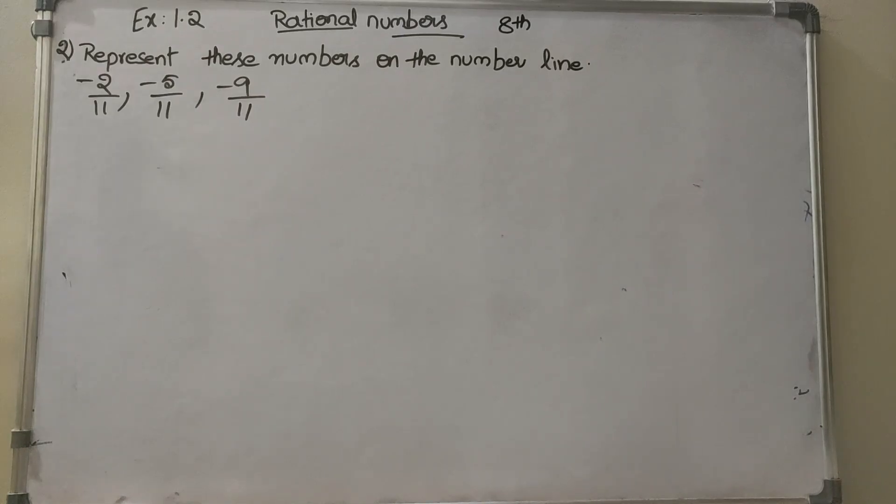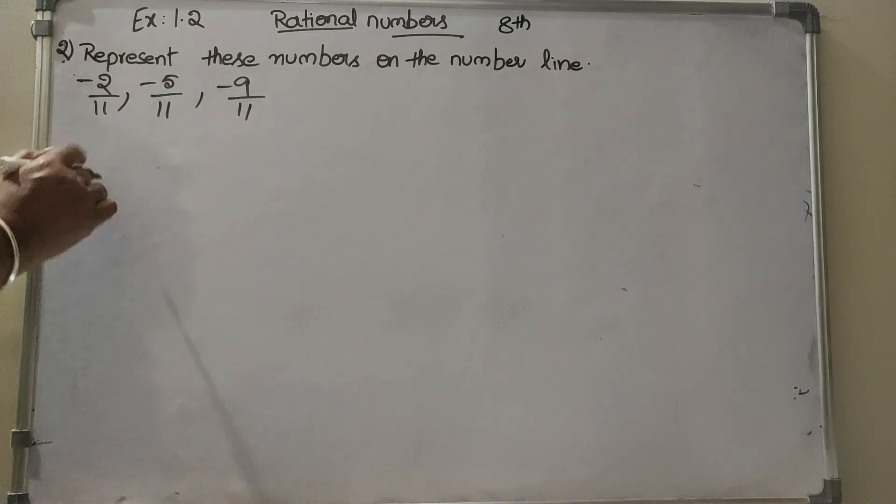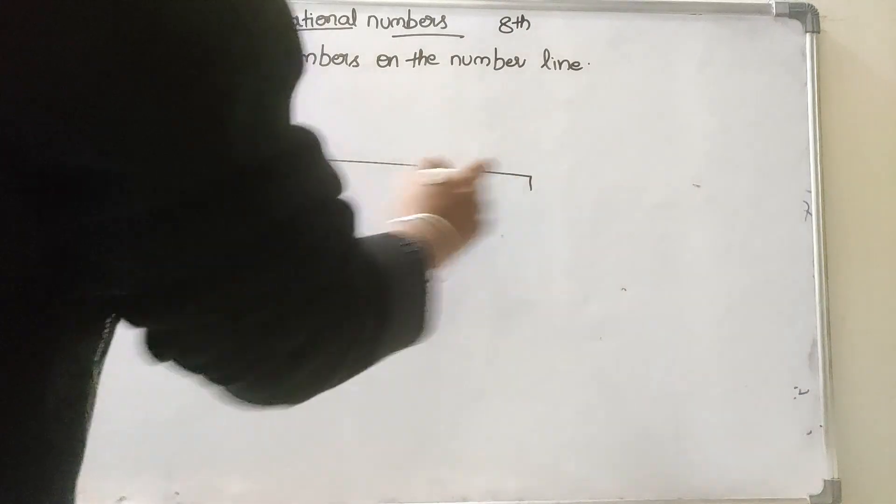8th Class CVSC Maths, 1st Chapter Rational Numbers, Exercise 1.2, 2nd Question: Represent these numbers on the number line: minus 2 by 11, minus 5 by 11, minus 9 by 11. So, how we will show these on the number line is...